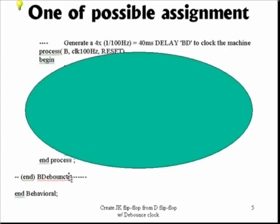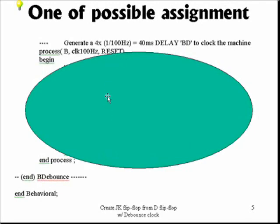To make this serve as your assignment, I have blotted out the necessary step required to produce a 40 millisecond delay for a clean debounced button. That will be used to clock the data flip-flop we read off a while ago. It is created by using a process sensitive to the input bouncy button B, the clean debounced 100 hertz clock, as well as the reset, and out of this it will create BD — the debounced button — which is part of this assignment.